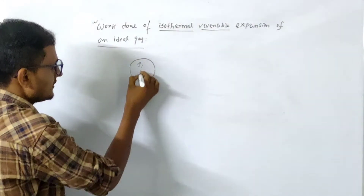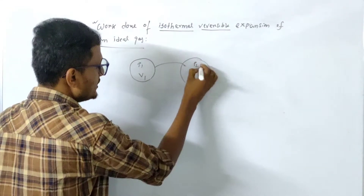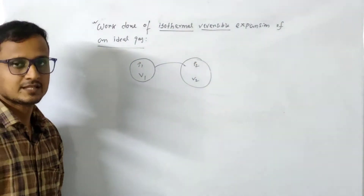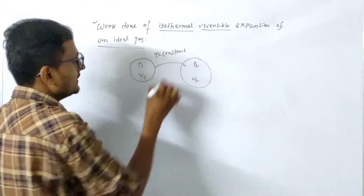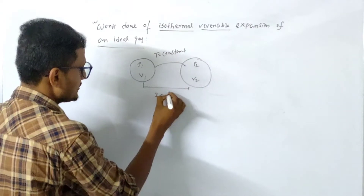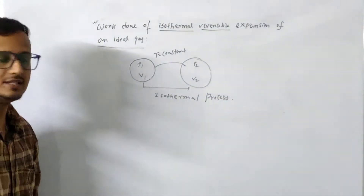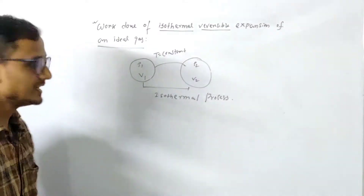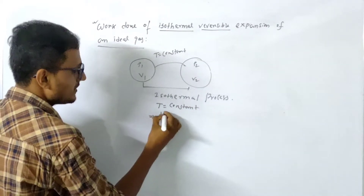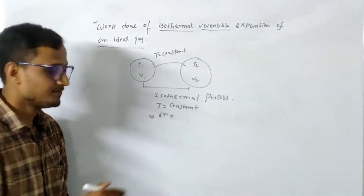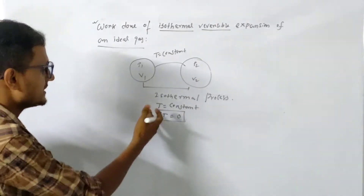Say a gas is in state with pressure P1 and volume V1, and it changes its state to P2, V2 — pressure P2 and volume V2. If in this change temperature is constant, that means there is no change in temperature, then this process is called isothermal process. The condition is ΔT = 0.